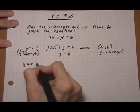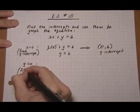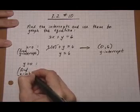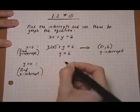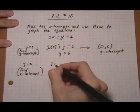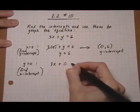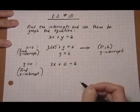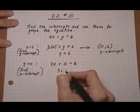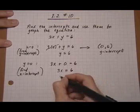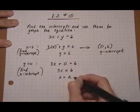If we set y equal to zero, this will find the x-intercept. So 3 times x plus 0 for y equals 6. That's the same as 3x equals 6. Divide by 3 on both sides and we get x equals 2.